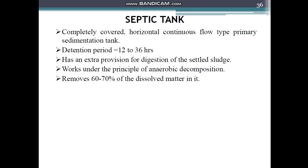The digested sludge from the tank is periodically removed at an interval of 6 to 12 months, not exceeding 3 years, and taken to a nearby sump from where it may be pumped up to the ground and disposed of in a sanitary manner after drying. So the septic tank is cleaned once in 6 months, once in 2 years, or at a maximum of 3 years, after which the sludge is removed.